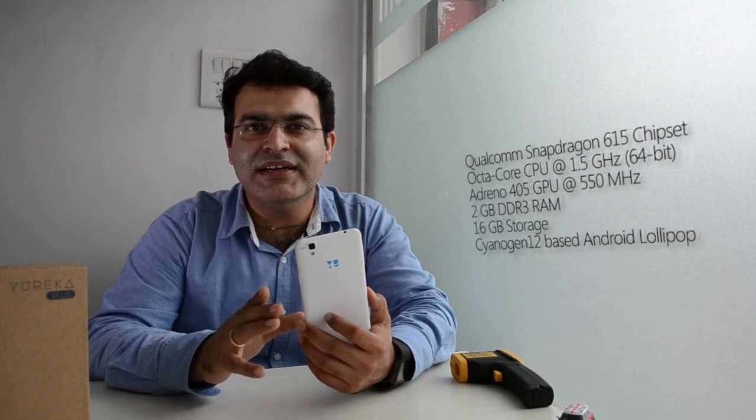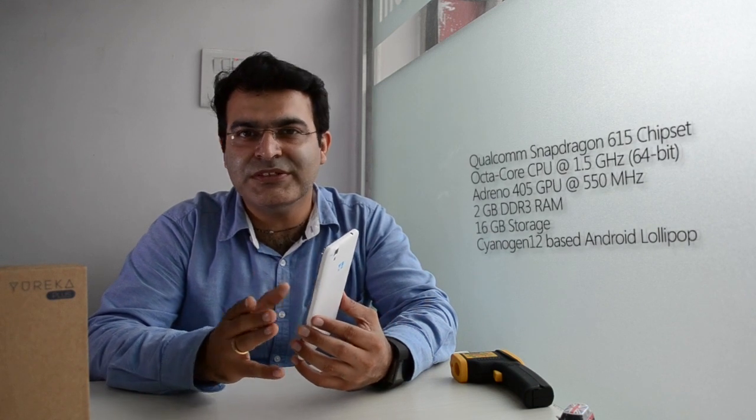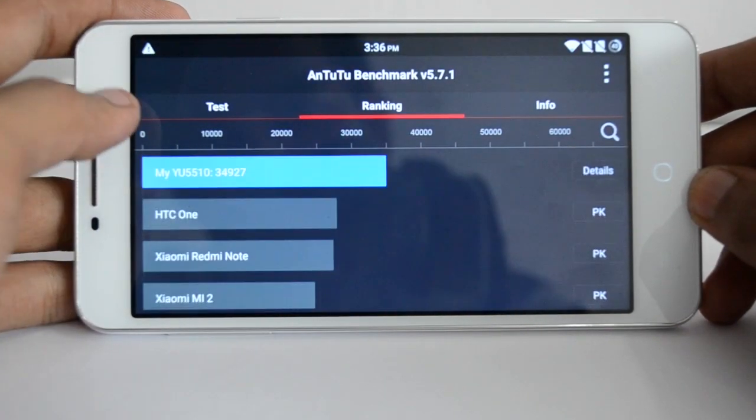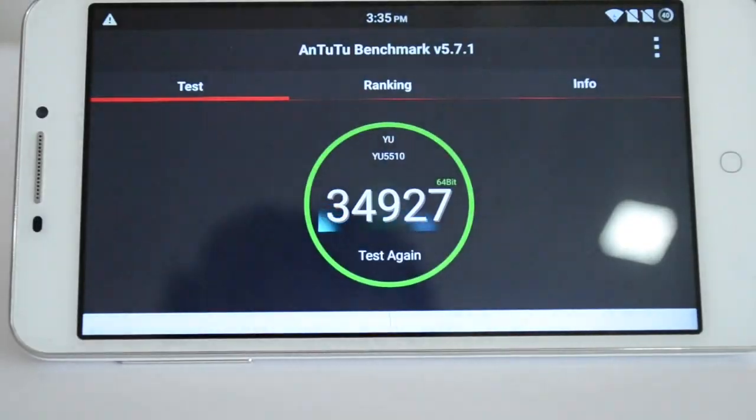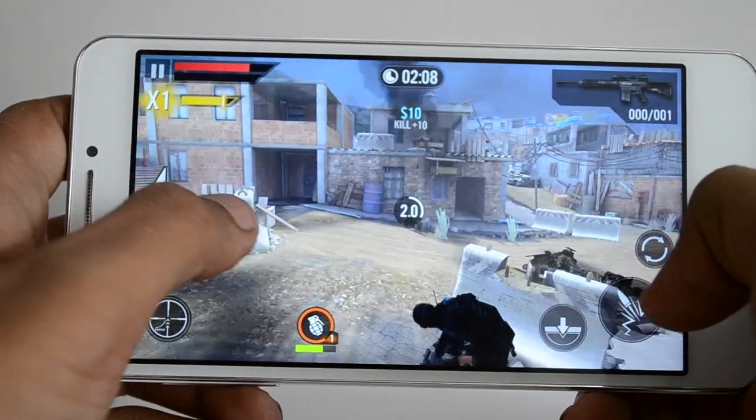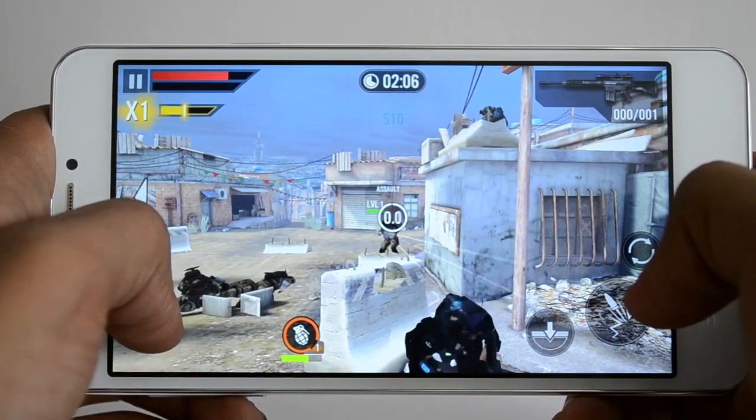Talking about the specifications and performance of the Eureka Plus, it is very similar to the Eureka. It comes with a Snapdragon 615 chipset which is an octa core CPU, 2GB of RAM and 16GB internal memory. On Antutu we got a score of around 34,000 when we tested. We also played Frontline Commando 2 which is a fairly heavy game, and it showed very good performance at gaming.